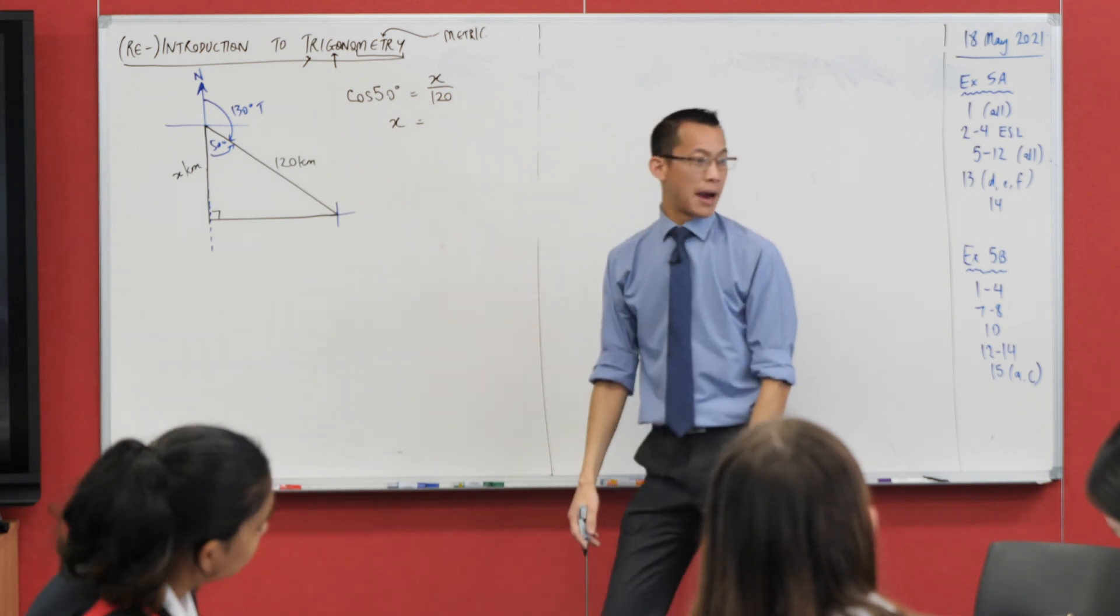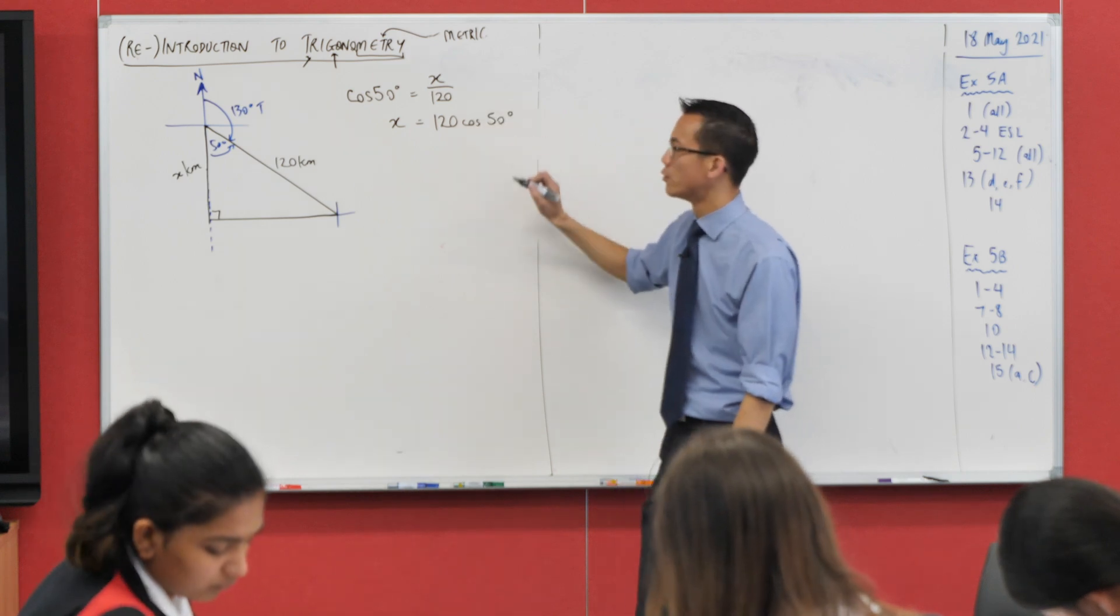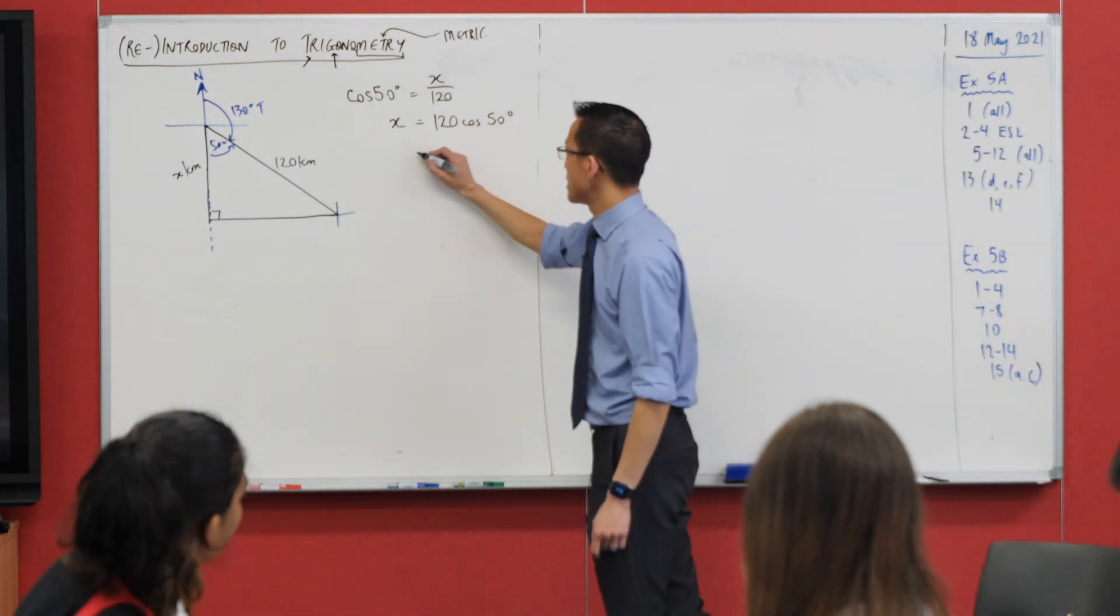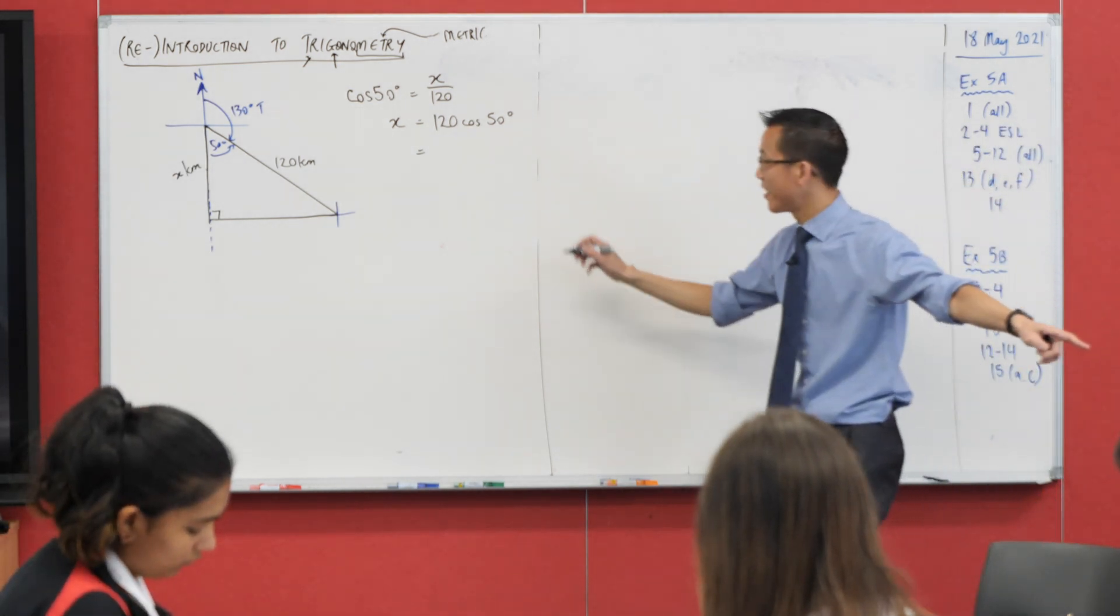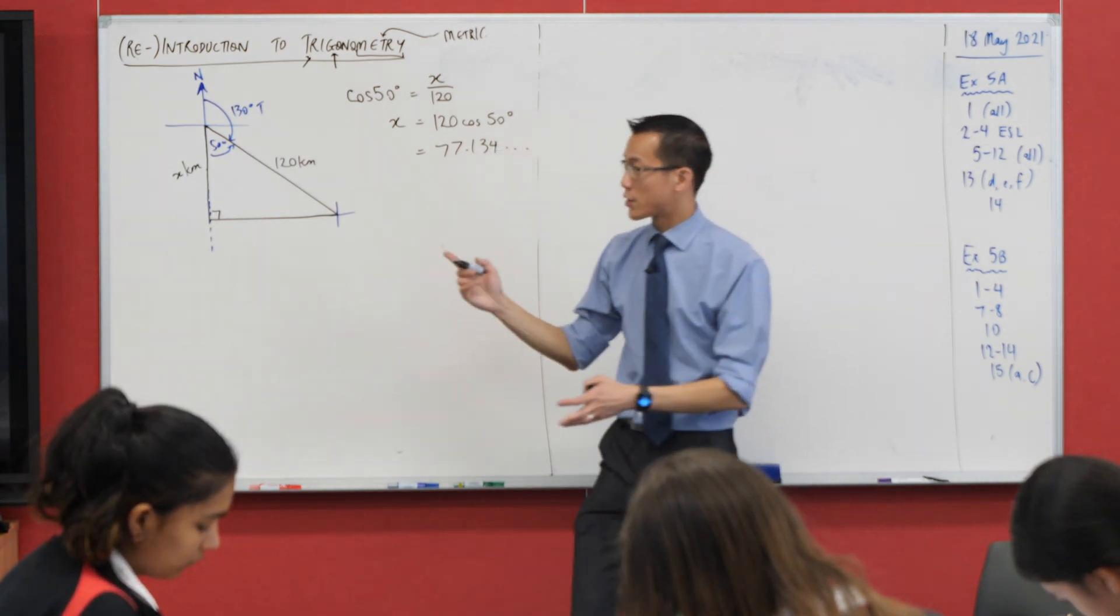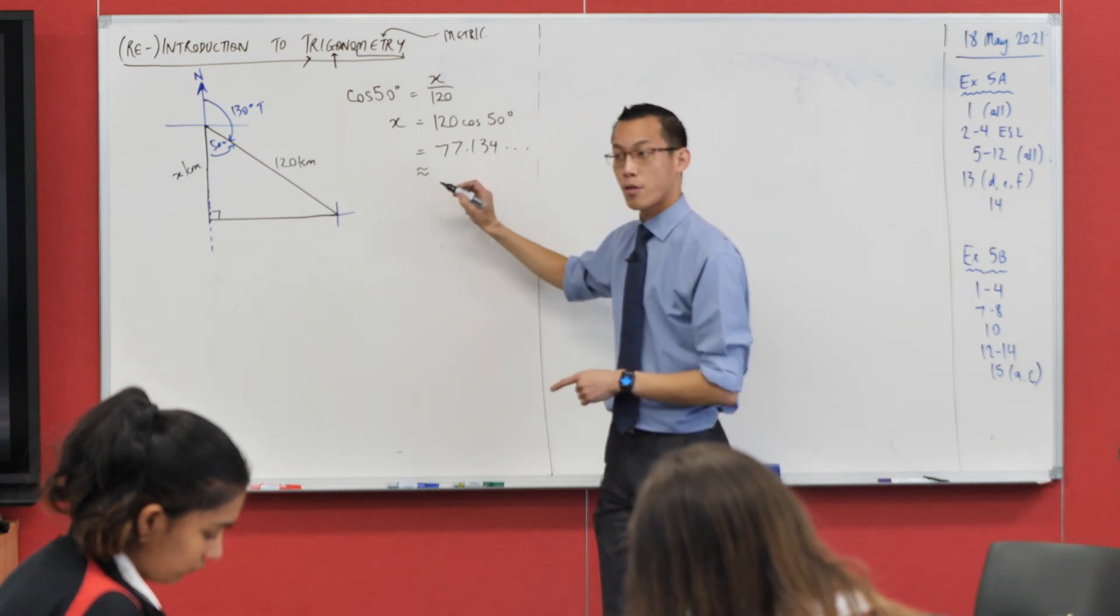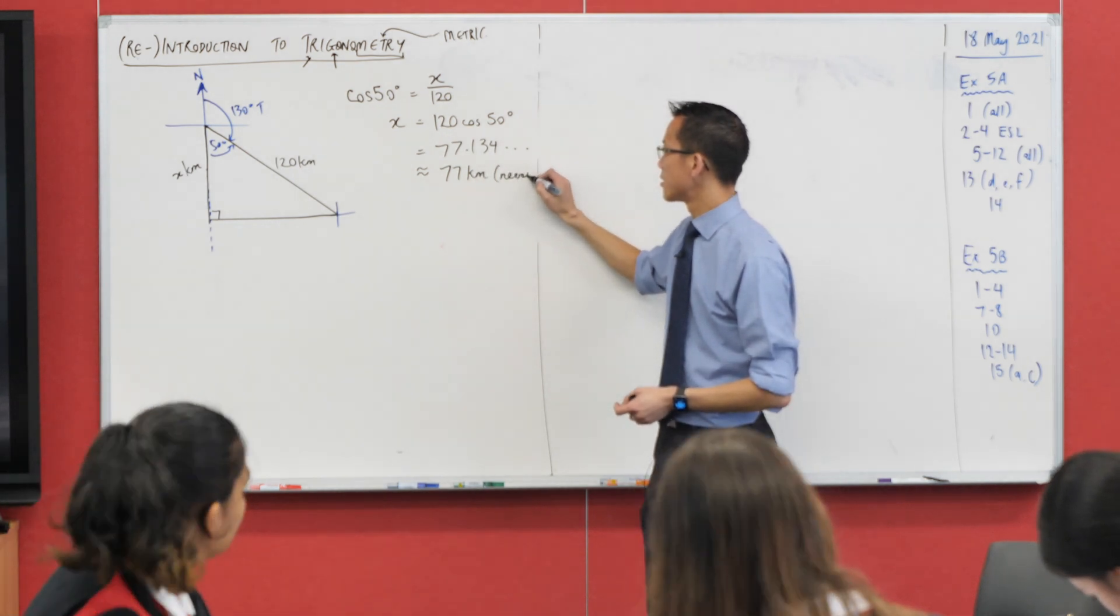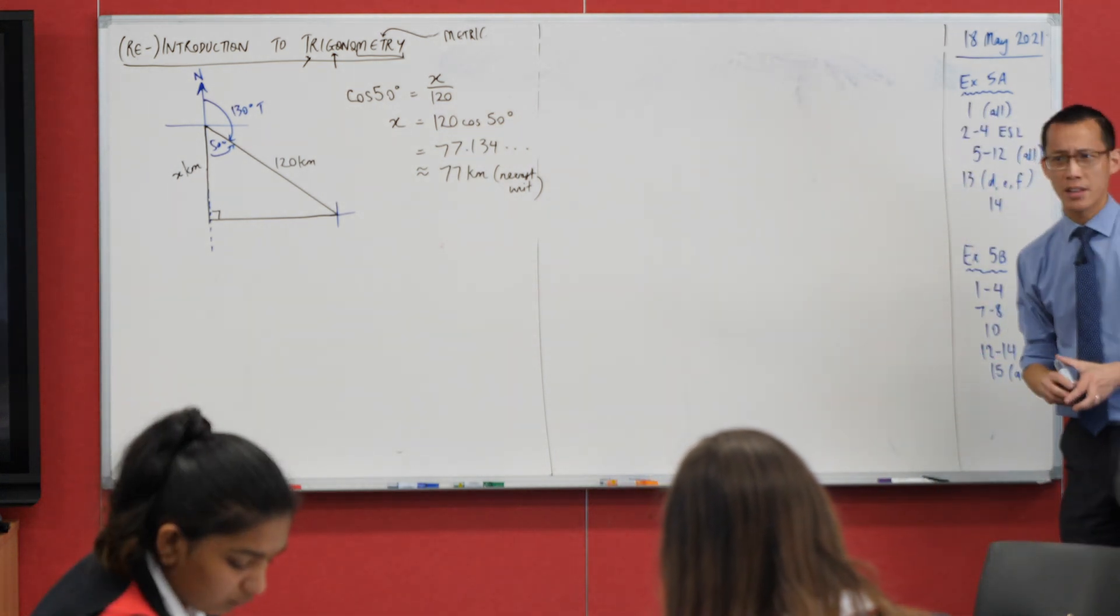I just want the x by itself, so I'm going to multiply both sides through by 120. I think that is a really helpful line to have, and then at this point, it's calculator work, yeah? So x is going to be equal to, who's going to get there first? Has someone already got it? 134 dot dot dot. The question itself has asked us to get it to the nearest kilometre, so I'm going to put a last line for approximation, 77 kilometres to the nearest unit in this case. Are you happy with that? Any questions on how we set that up?